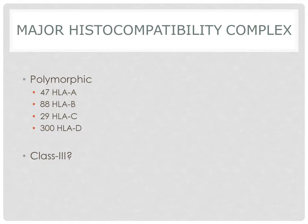Class 3 MHC is a third locus that lies between class 1 and class 2 genes. It contains several immunologically important genes that encode cytokines, most notably tumor necrosis factor (TNF), as well as complement proteins C2 and C4, which participate in the complement cascade.